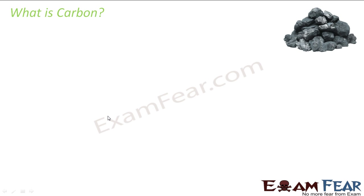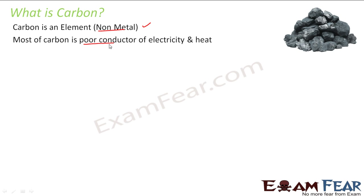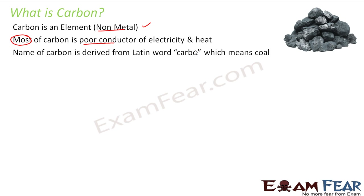The first thing that comes to our mind is: what is carbon? One of the forms of carbon is coal, which you must have seen in your life. Carbon is an element and it is a non-metal — please note, carbon is a non-metal. Carbon is generally a poor conductor of heat and electricity, though there is an exception we will cover. The name carbon is derived from the Latin word 'carbo,' which means coal, and coal was the first discovered form of carbon.